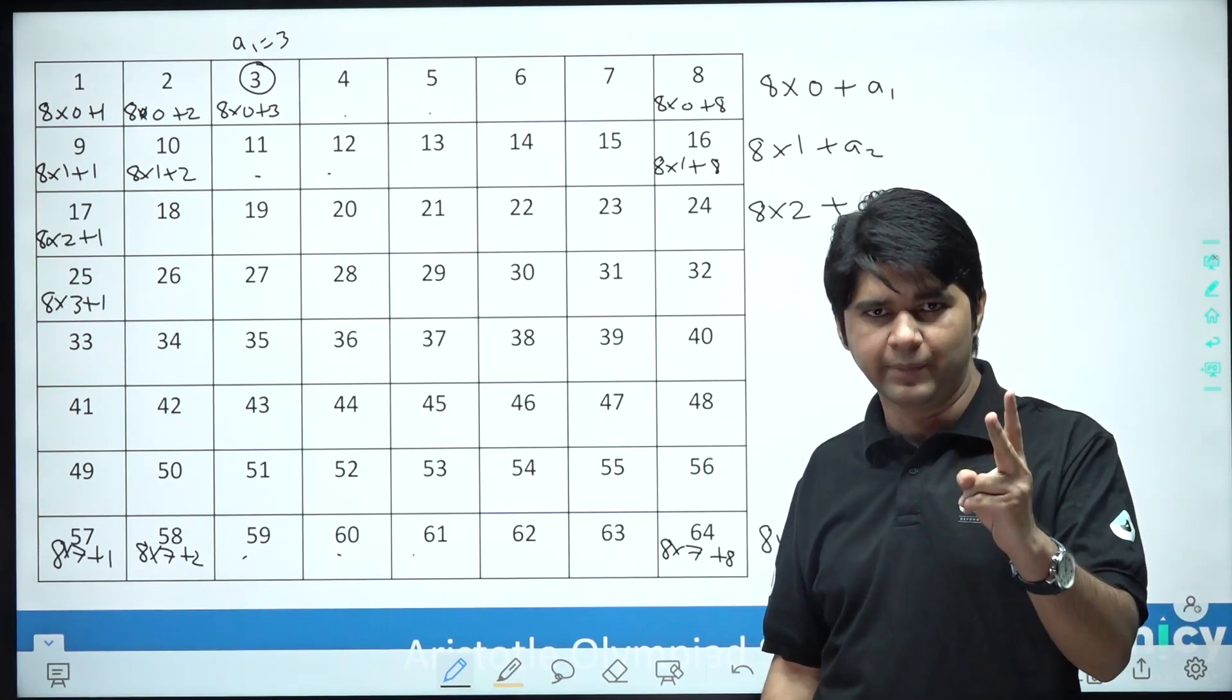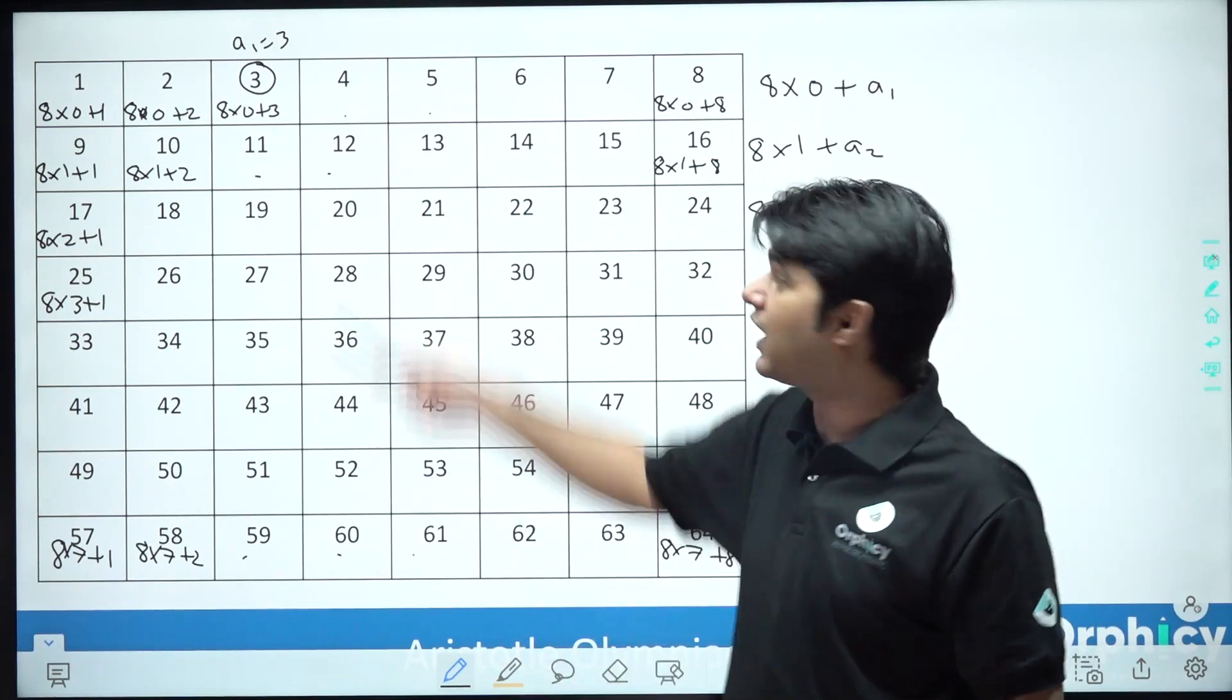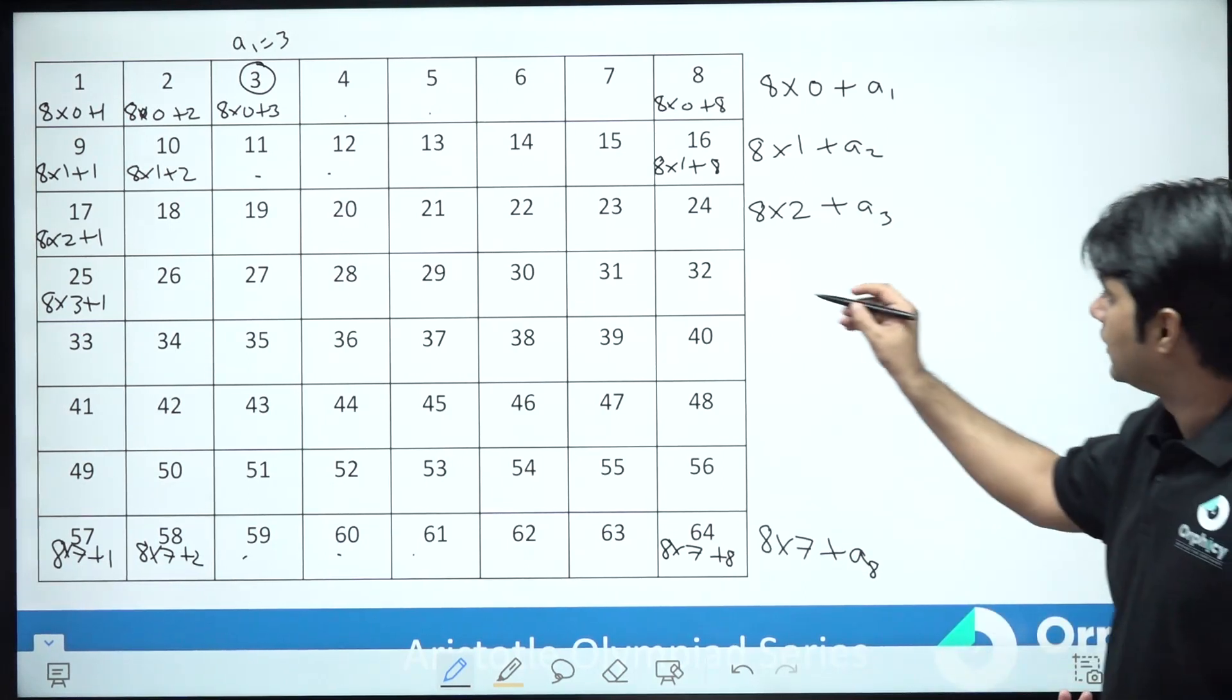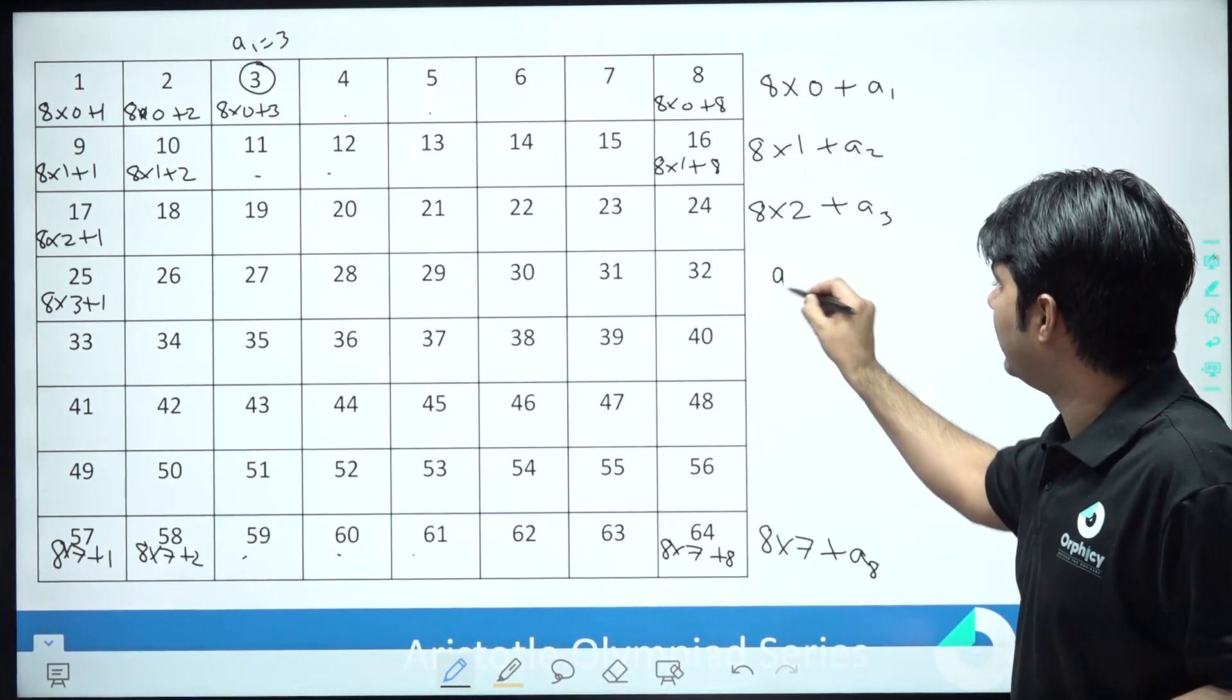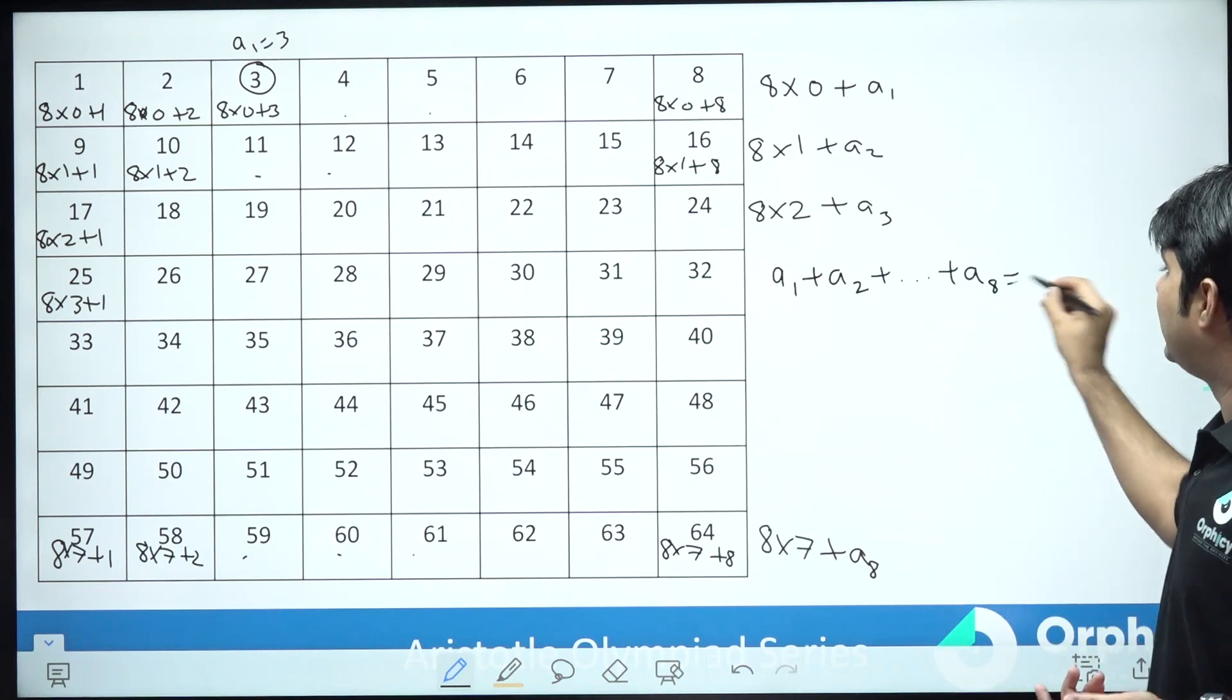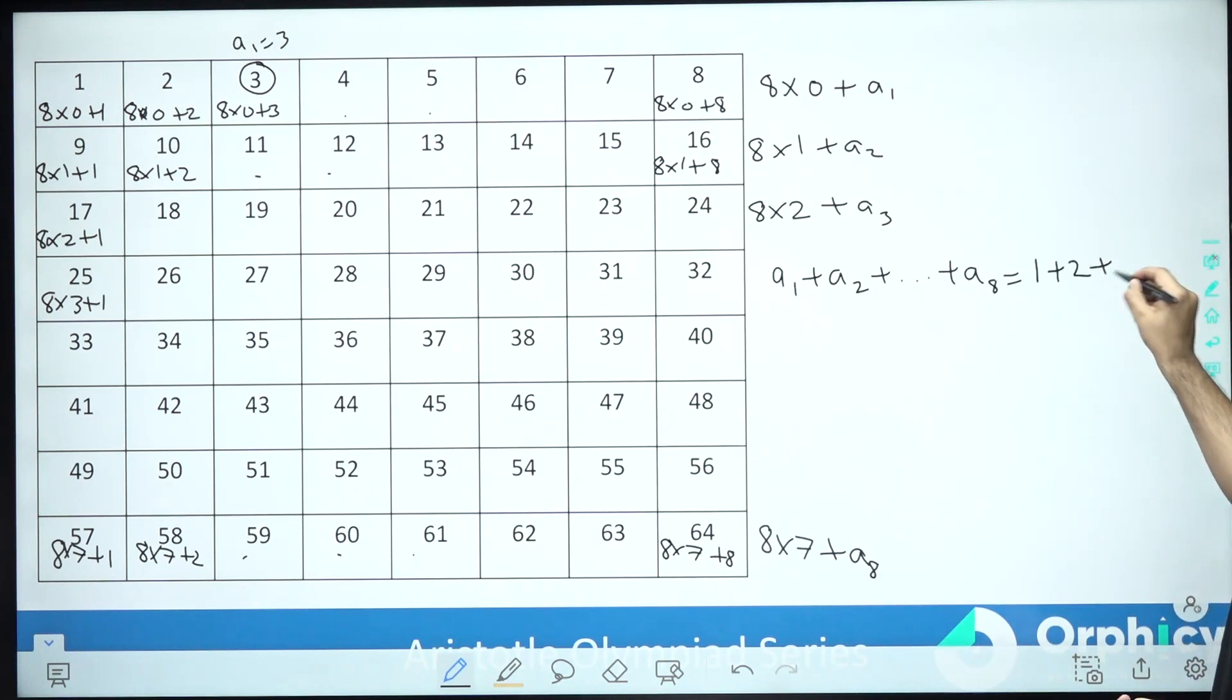No two elements from A1 to A8 can be the same because this means that they are from the same column. So that is not possible. I know that my numbers from A1 till A8 are distinct natural numbers from 1 to 8. These are distinct natural numbers from 1 to 8. Now I know that this sum will be 36.